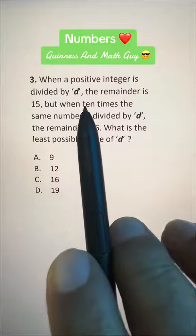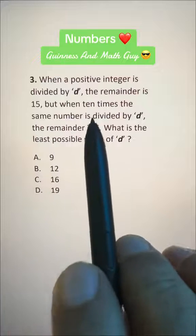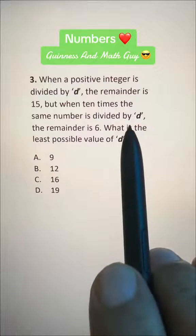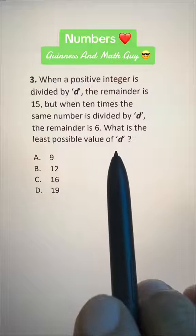When a positive integer is divided by D, the remainder is 15, but when 10 times the same number is divided by D, the remainder is 6. What is the least possible value of D?